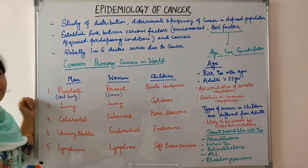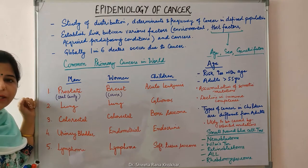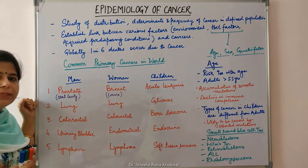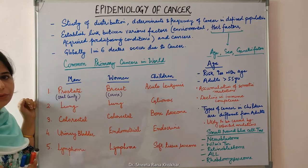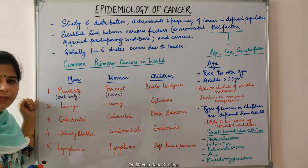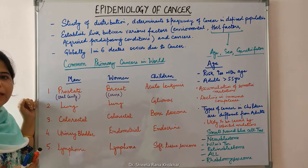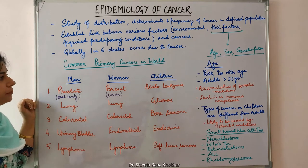What is the global impact of cancer? Globally, one in six deaths occur due to cancer. The incidence of cancer varies with geography, age, race and genetic factors.